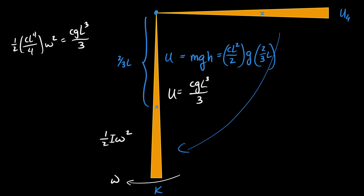The moment of inertia about the end is just CL to the fourth over four. The object is fixed in place so we say it's just rotating — we don't need translational kinetic energy. If it weren't fixed, we would need to worry about translational kinetic energy because gravity would also be doing work moving the object downward through space.